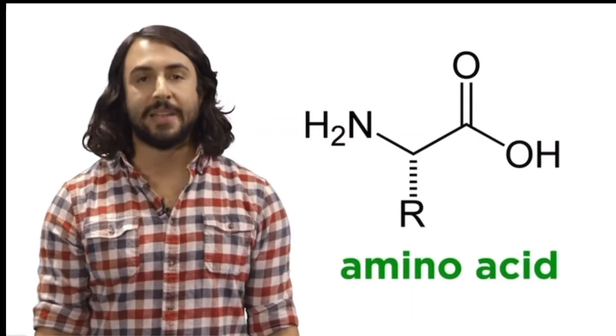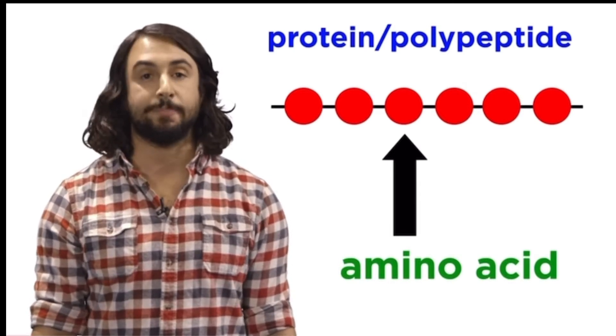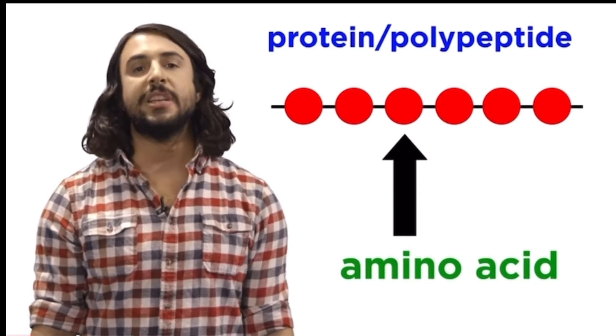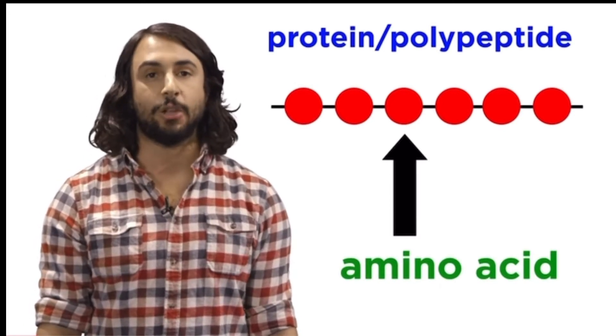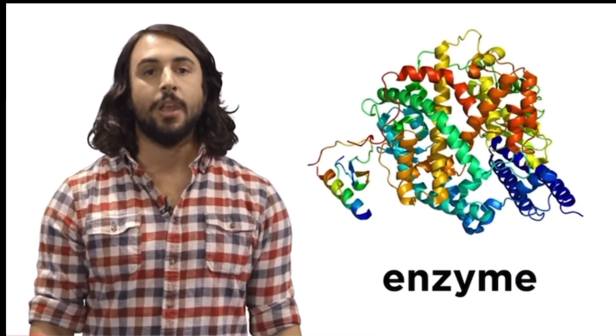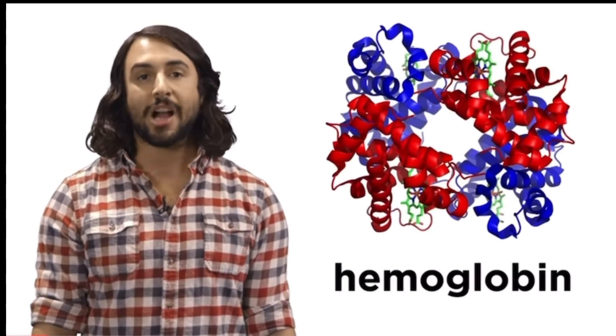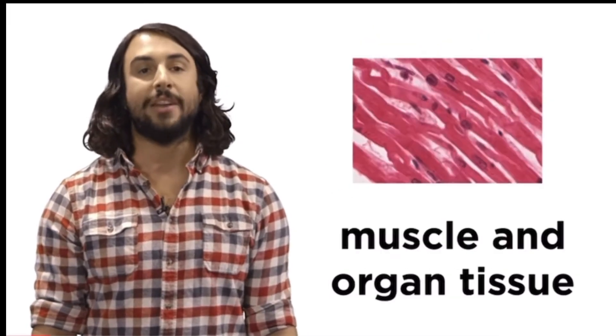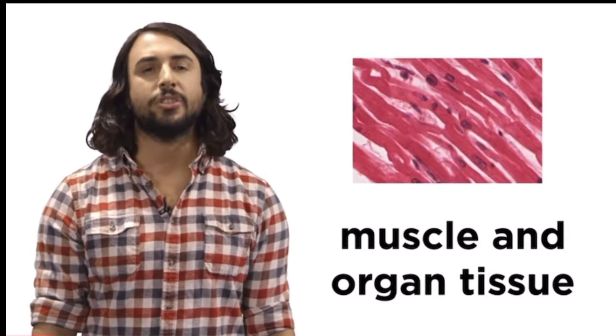It's Professor Dave. I want to tell you about proteins. So we know about amino acids, and these are the monomers that will form proteins, which are also known as polypeptides. Proteins are polymers of amino acids, and they are the most diverse type of biomolecule in your body. Different kinds of proteins include enzymes that catalyze chemical reactions, receptors that control signaling in your body, hemoglobin which carries oxygen throughout the bloodstream, muscle and organ tissue which give your body structure and mobility, and so many other things.